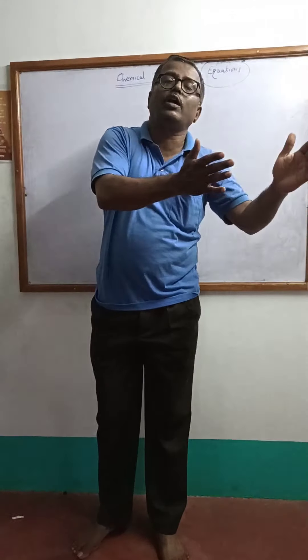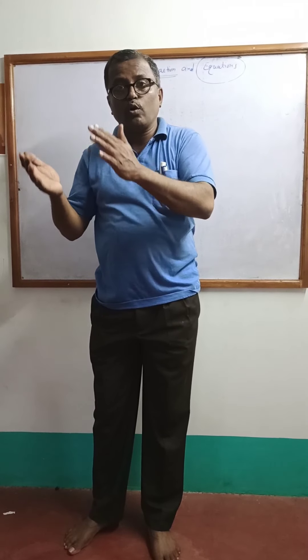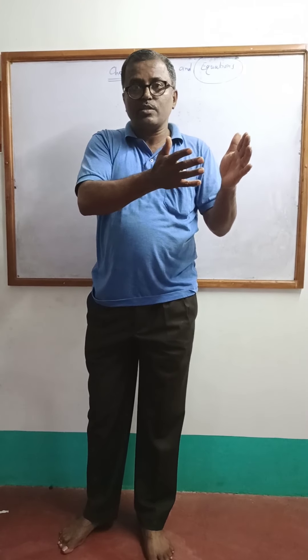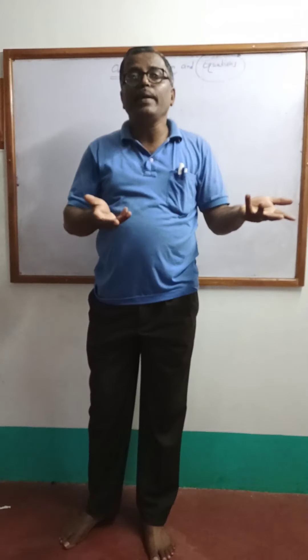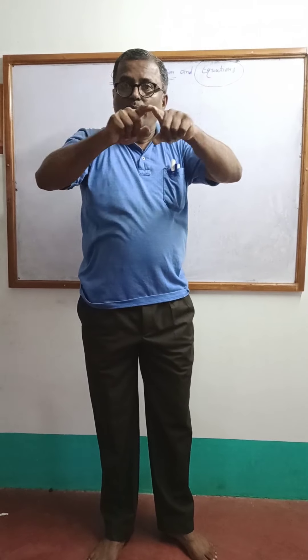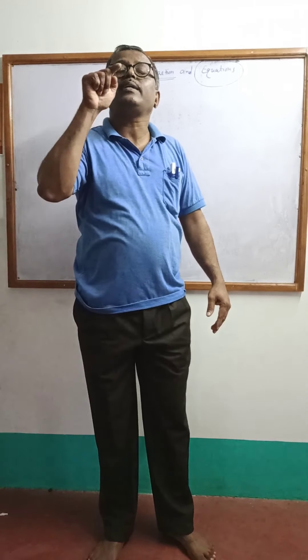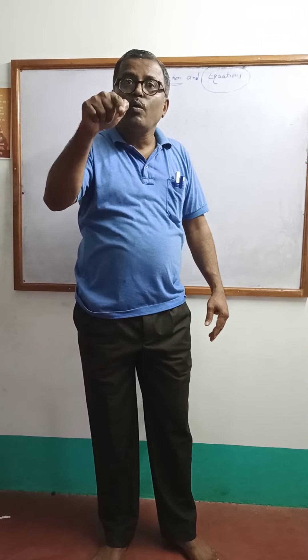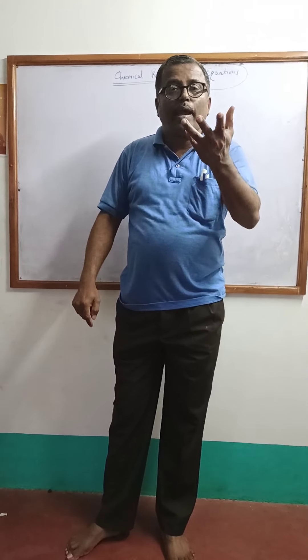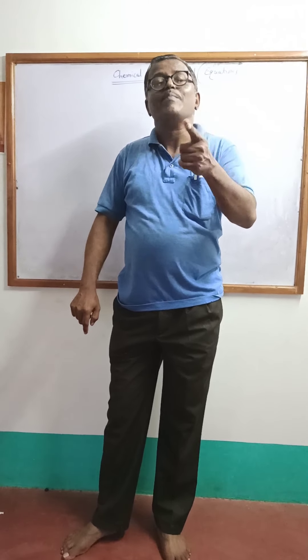Milk turned into yogurt or curd — chemical change. Raw mango ripens and gets sweet — chemical change. When we drop a large piece of glass and it breaks into pieces, what is that? Physical change.